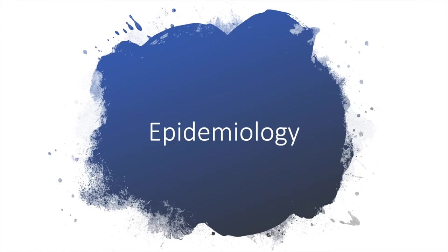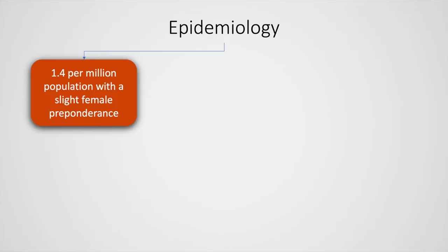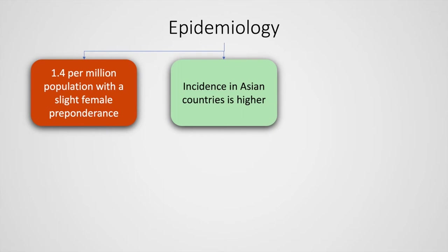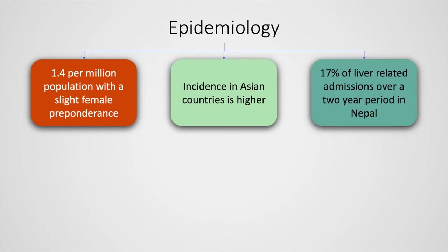Let's now discuss the epidemiology of Budd-Chiari syndrome. A prevalence of 1.4 per million population with a slight female preponderance is seen. However, the incidence in Asian countries is higher — according to one case series, Budd-Chiari syndrome accounted for up to 17% of liver-related admissions over a two-year period in Nepal.